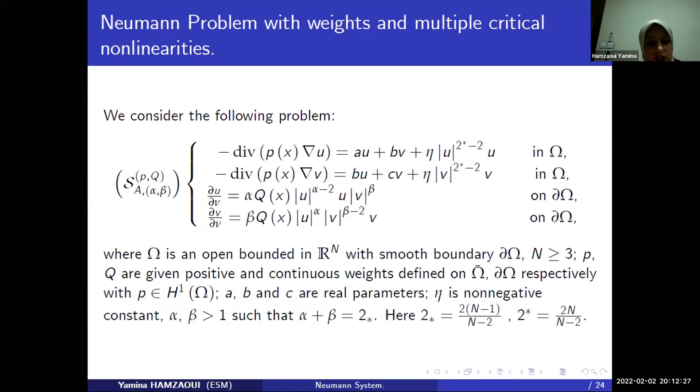We consider the following existence of positive solution for the following system, where the weights P, Q are continuous, positive and continuous, and A, B, C, eta are real parameters, and alpha, beta, such as verify alpha plus beta equals 2 star, and 2 star is the critical Sobolev exponent for embedding H01 into L2 star of omega.